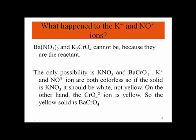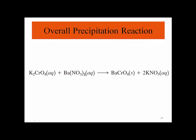So that's the overall precipitation reaction. We have potassium chromate plus barium nitrate, both in aqueous phase. On the product side, we have one aqueous phase compound and one solid — that's why it's a precipitation reaction. Barium chromate is the solid precipitate. Potassium nitrate remains in solution as dissociated K⁺ and nitrate ions, while barium chromate forms during the precipitation reaction.